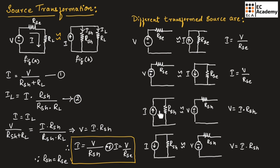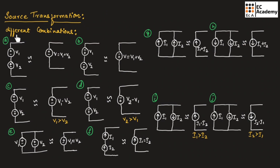So this is how we can perform source transformation. Now let us see different combinations of source transformation. If there are two voltage sources connected in series with the same polarities — plus and minus, plus and minus — we can replace them with a single voltage source equal to V1 plus V2, and the polarity of this combined voltage source will be plus and minus, similar to the two original voltages.